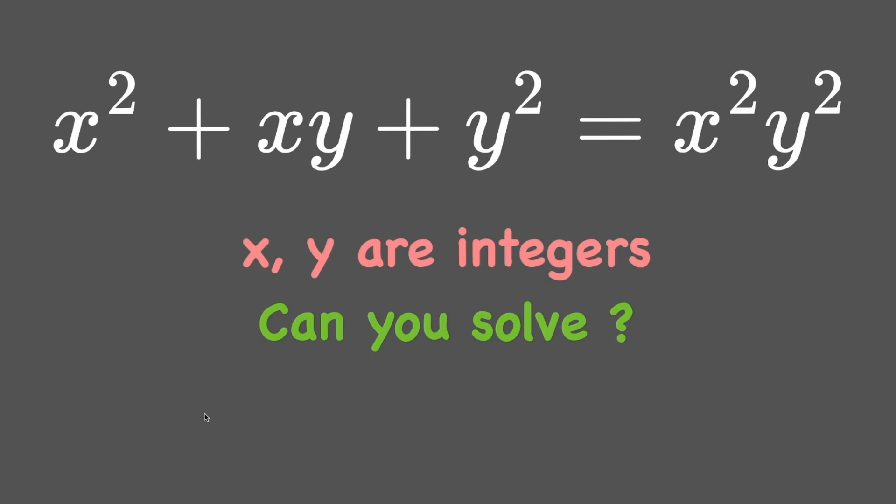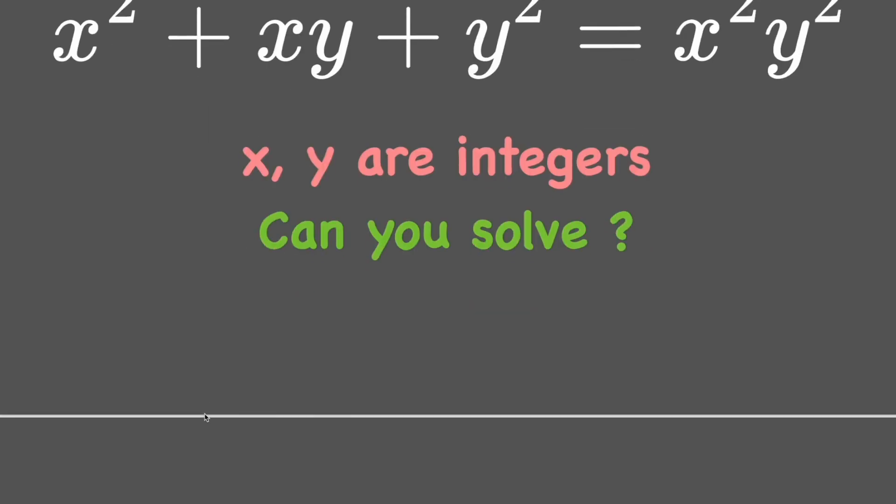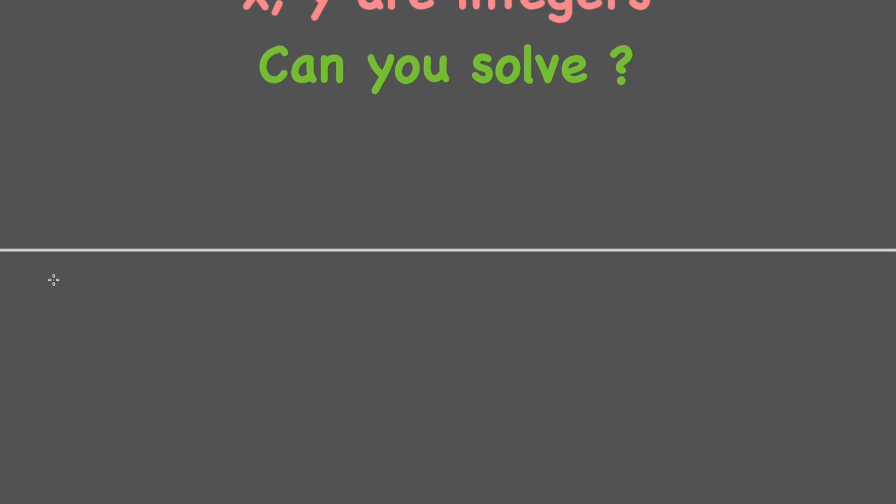Or we can combine it into one side and the other side will be equal to zero and factorize it. Now let's try with the method to factorize on one side and we write x² + y² + xy minus x²y² equal to zero.